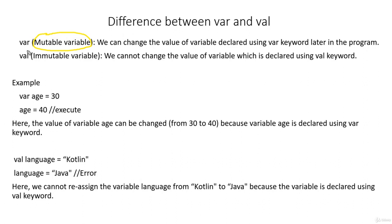Whereas if you see the val keyword, we have an immutable variable. Immutable means it is not possible to change — it cannot be changed. So we cannot change the value of a variable which is declared using the val keyword. If we create a variable using val, we will not be able to change its value at a later stage.